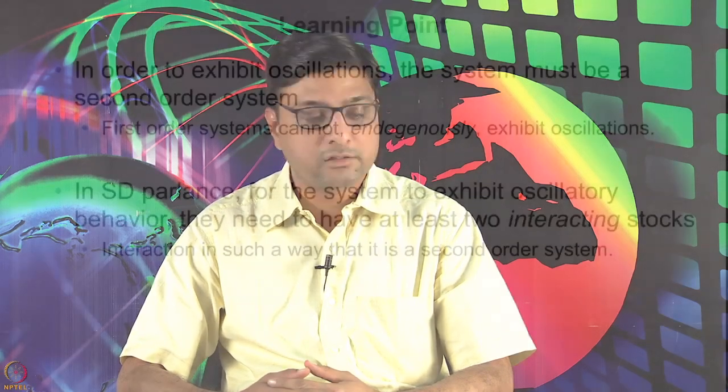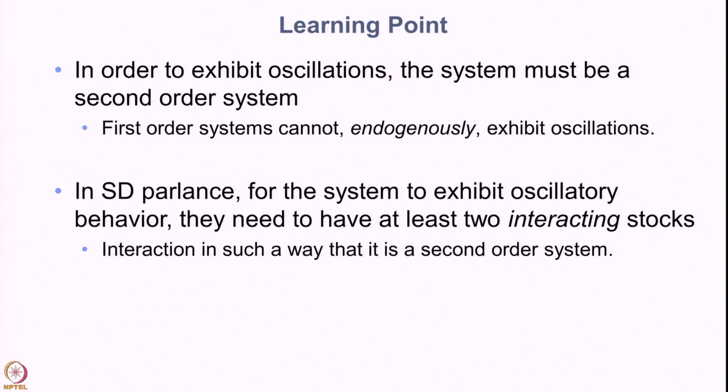The learning point is that we have understood and modeled oscillations using a simple mechanical system — a simple pendulum — using system dynamics. To exhibit oscillations, a system must be a second-order system. First-order systems cannot endogenously exhibit oscillations. In SD terms, for a system to exhibit oscillatory behavior it needs at least two interacting stocks. Just having two stocks is not sufficient — they must interact such that one stock affects the flow into the other and vice versa, forming a feedback system that results in a second-order system capable of oscillatory behavior.